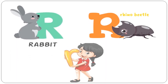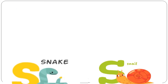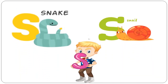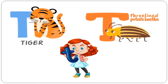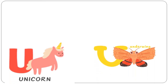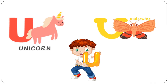R is for Rabbit. R is for Rhino Beetle. S is for Snake. S is for Snail. T is for Tiger. T is for Threeland Potato Beetle. U is for Unicorn. U is for Underwing.